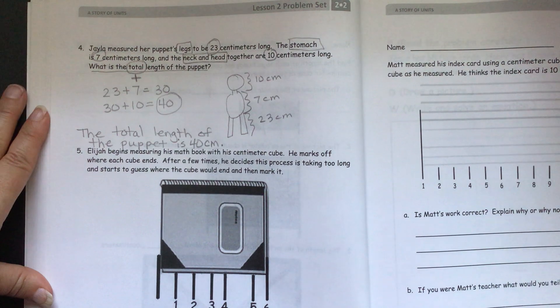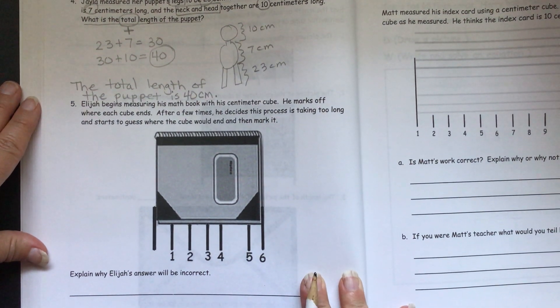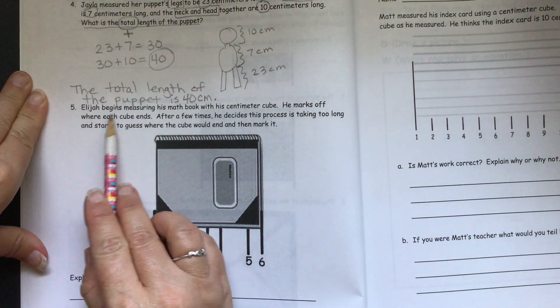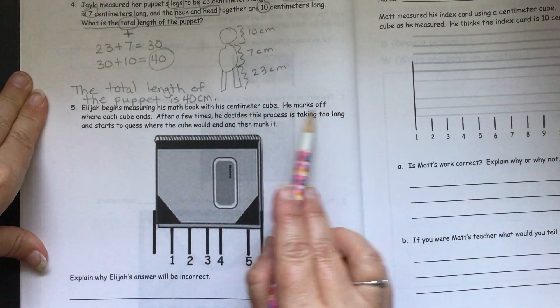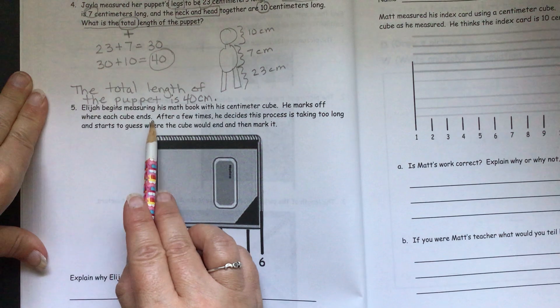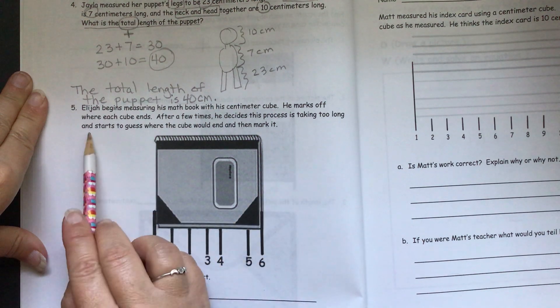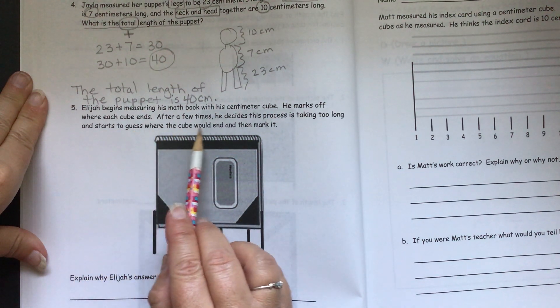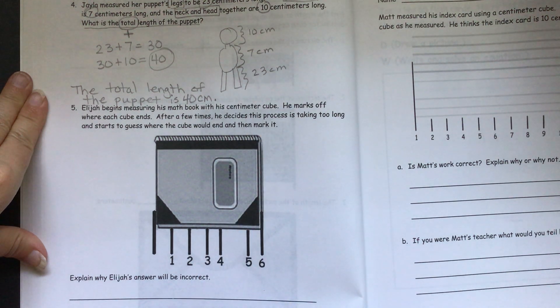So we are going to talk about this next one. Elijah begins measuring his math book with his centimeter cube. He marks off where each cube ends. After a few times, he decides this process is taking too long and starts to guess where the cube would end and then mark it. Well, let's see how he did. Does it look like he made good guesses there?